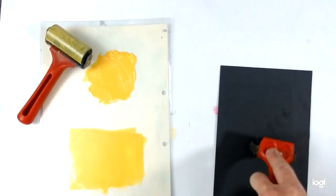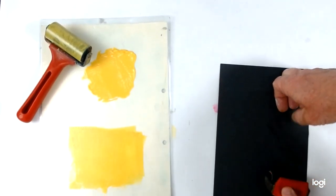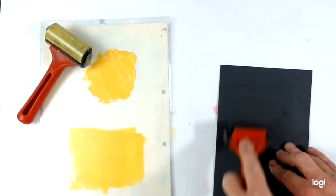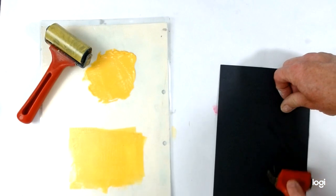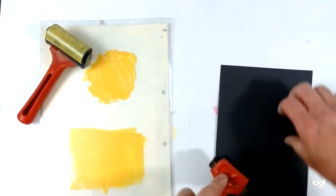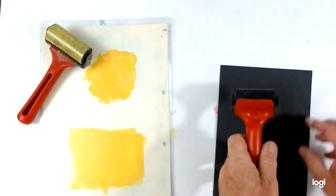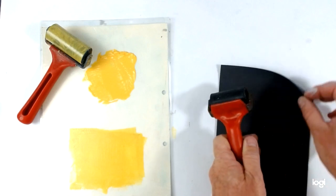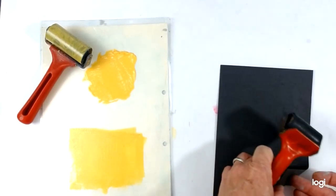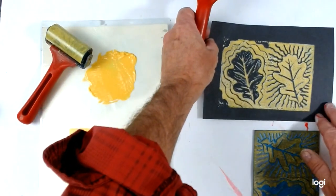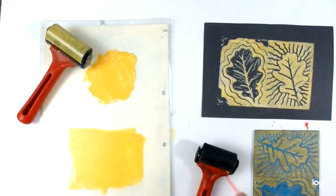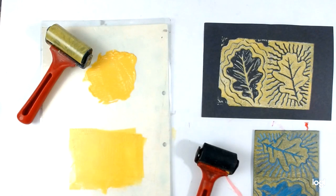Flip it over and burnish again. See how it's coming on? Not bad. So hopefully you can see you've got a really nice clear yellow, which you wouldn't get if you try to put the yellow straight onto the black.